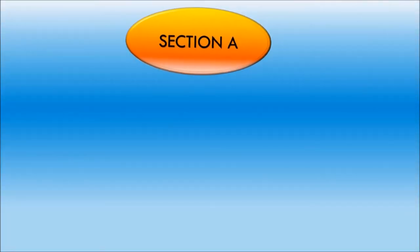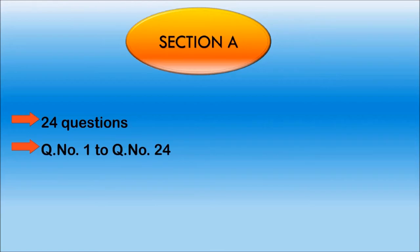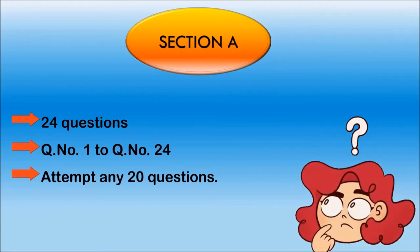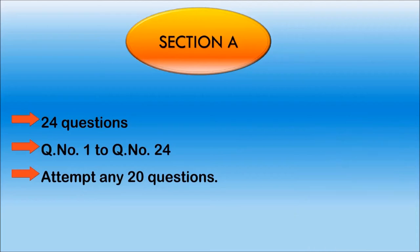Section A consists of 24 questions from question number 1 to question number 24, out of which you have to attempt any 20 questions. I suggest you attempt only 20 questions out of 24, the best you know. You may raise a question here: What would happen if a student attempts more than 20 questions? In such a case, the student's first 20 attempts will only be considered for evaluation and the rest will not be corrected, irrespective of whether the answers are right or wrong.